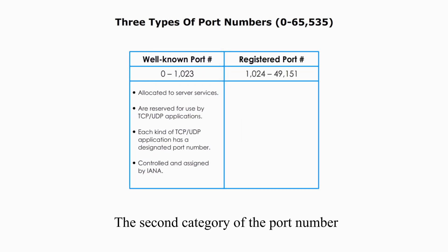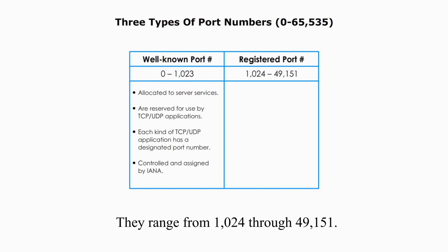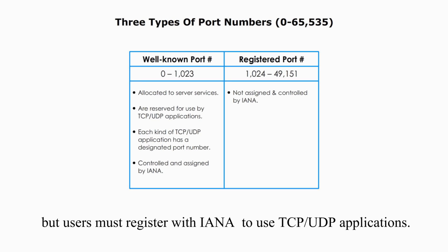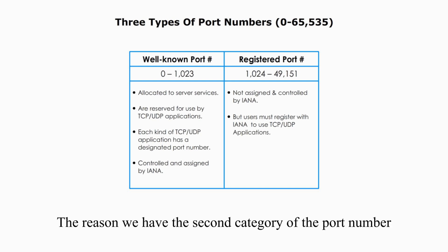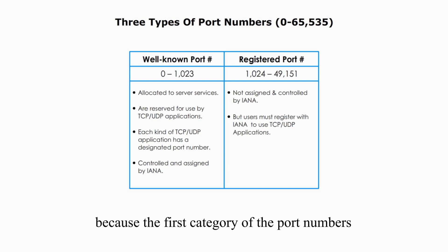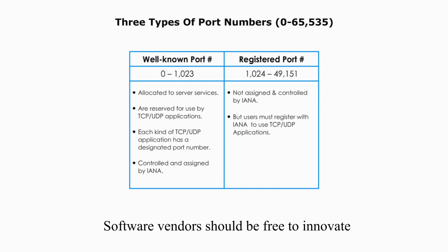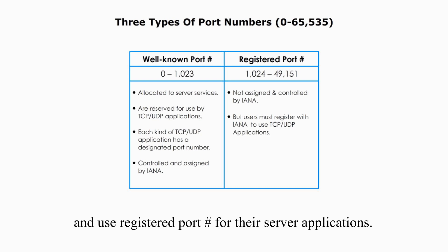The second category of port numbers is called registered port numbers. They range from 1024 through 49,151. They are not controlled and assigned by IANA, but users must register with IANA to use TCP and UDP applications. The reason we have this second category is because well-known port numbers could not possibly cover every application. Software vendors should be free to innovate and use registered port numbers for their server applications.